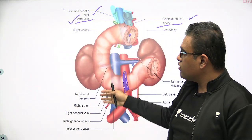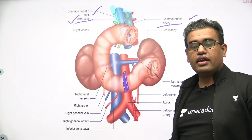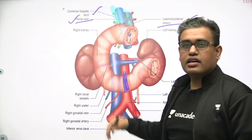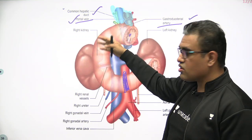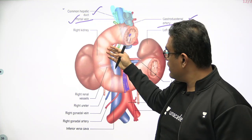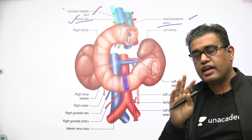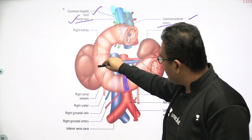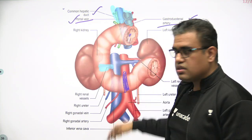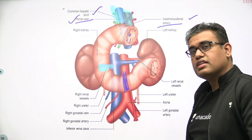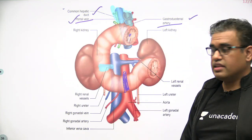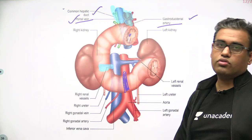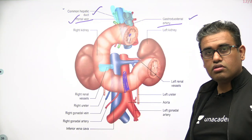Behind the second part of the duodenum lies the hilum of the right kidney. Since the right kidney is behind it, the right renal vessels and the right ureter will also be lying behind the second part of the duodenum. These are very important structures to know.